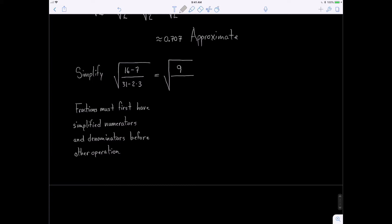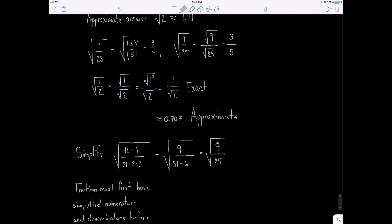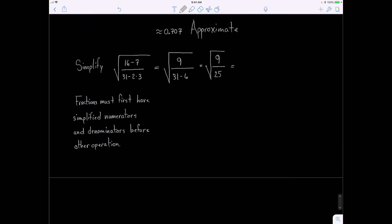So now look at the denominator. It has multiplication in here also, so I first have to deal with the multiplication. That's 2 times 3, which is 6. So then my next step is I have the 9, and now I can deal with my subtraction, 31 minus 6. That's 25. Oh, and look at that! We did that fraction right up here, and we know the answer is 3 fifths.